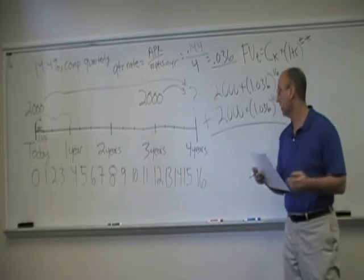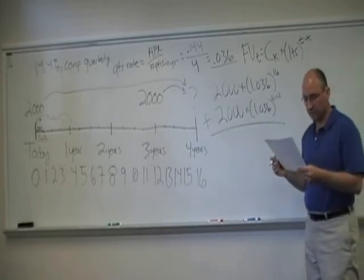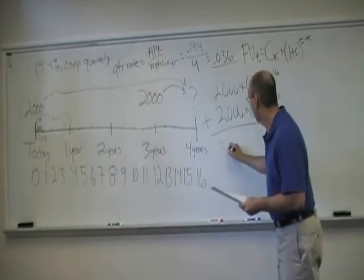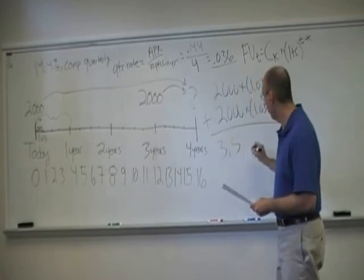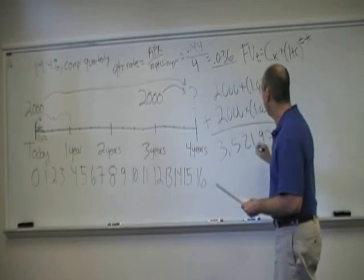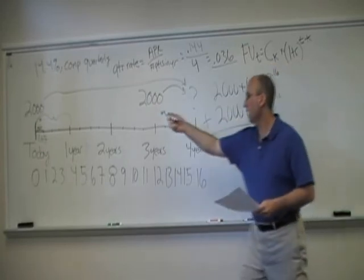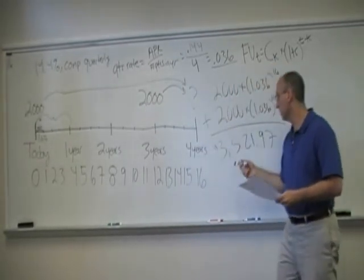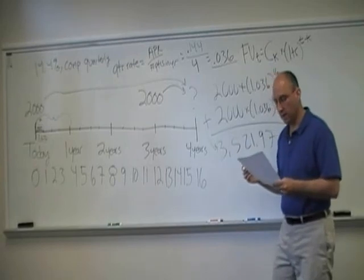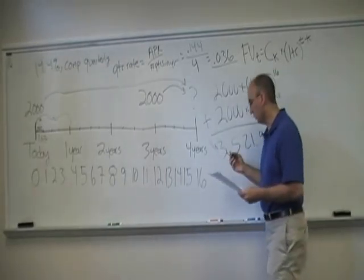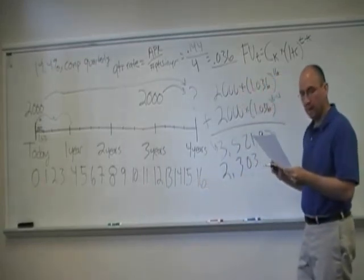So 2,000 times 1.036 to the 16th is equal to $3,521.97. That's what that's equal to. So the 2,000, it grew for four years, grew for 16 quarters, into about 3,500. The 2,000 only had one year to grow, and it grew, or was expected to grow, $2,303.93.